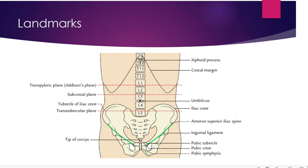Looking at the diagram, the important landmarks you can see are the xiphoid process above, and exactly in the midline below you have the pubic symphysis. On either side of the xiphoid process you have the costal margin. The ribs contributing to the formation of the costal margin are the 7th, 8th, 9th, and 10th ribs. The 11th and 12th ribs are floating ribs; they do not come to the anterior aspect and are not part of the costal margin.